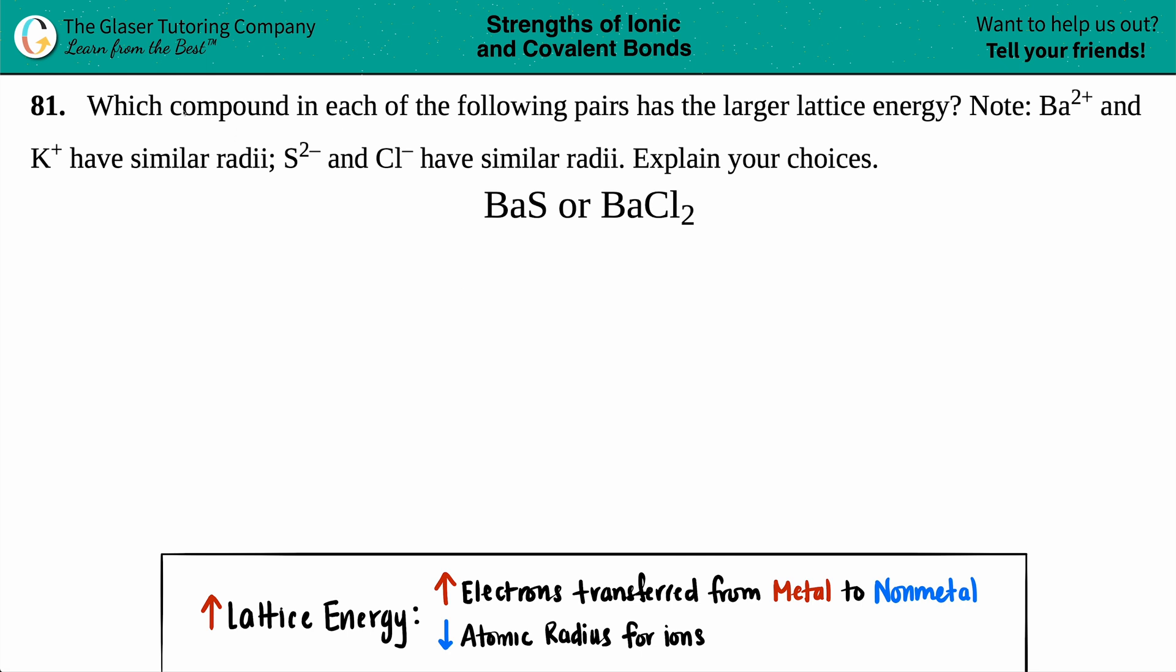Number 81: Which compound in each of the following pairs has the larger lattice energy? Note Ba2+ and K+ have similar radii, and S2- and Cl- have similar radii. Explain your choices. We have barium sulfide (BaS) and barium chloride (BaCl2), and we want to find out which one has the larger lattice energy.